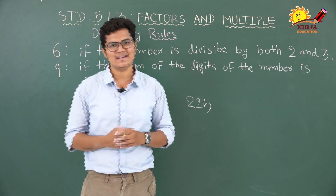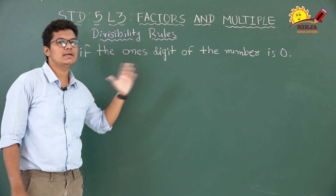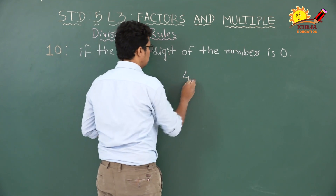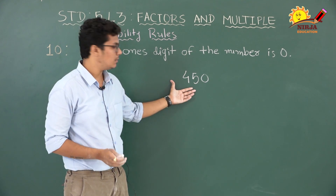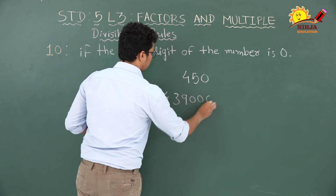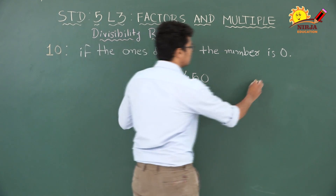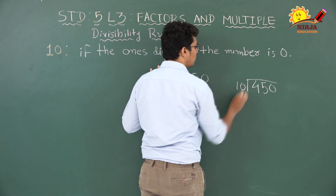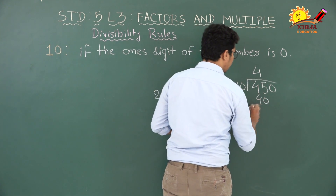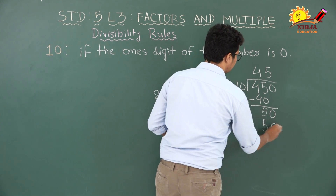Now the last one: 10. A number is divisible by 10 if the ones digit of the number is 0. For example, this number is divisible by 10 because the ones digit is 0. If you want to verify: 450 divided by 10 — 10 ones are 10, 10 twos are 20, 10 threes are 30, 10 fours are 40; bring down 0, 10 fives are 50, remainder is 0. So any number with 0 in the ones place is exactly divisible by 10.